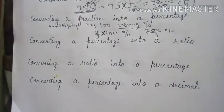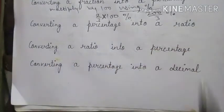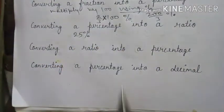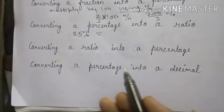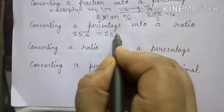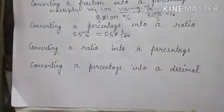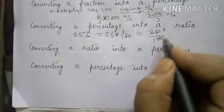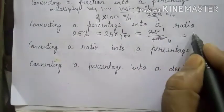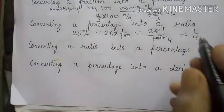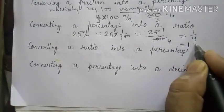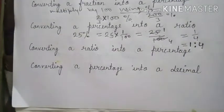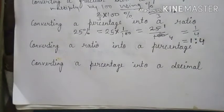The next topic is converting a percentage into a ratio. If we have 25%, we first convert it to a fraction: 25 upon 100, which simplifies to 1 upon 4. Then we write it as a ratio: the numerator comes first, then the ratio sign, then the denominator — so it becomes 1 is to 4.